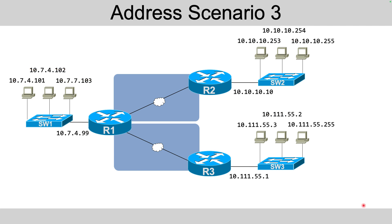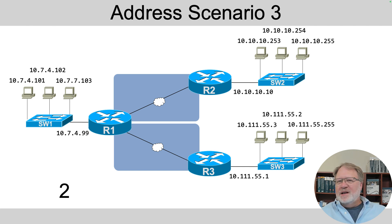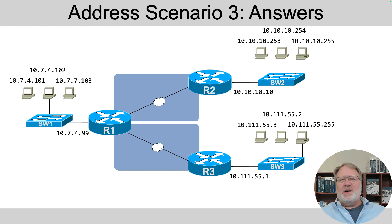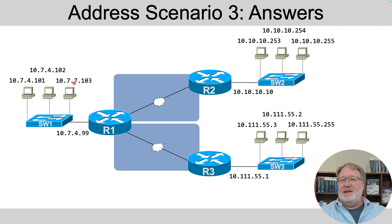Final scenario for this set of exercises — same diagram, different numbers. Here's your five seconds to hit pause, and then I'll talk about it. There's one problem in each section. The router address is 10.7.4.99. The PC addresses show 10.7.4 and 10.7.4 matching, but one shows 10.7.7 — that's the problem. The first three octets should be the same in these simple subnets, so that one's wrong.